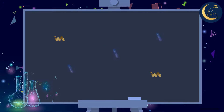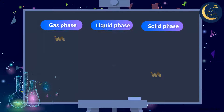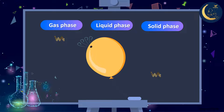And now, my friends, let us classify various kinds of matter according to their phases. Are you ready? Let's begin! Look at this balloon. What is the phase of the air inside the balloon? Great job! The air inside the balloon is in the gas phase.